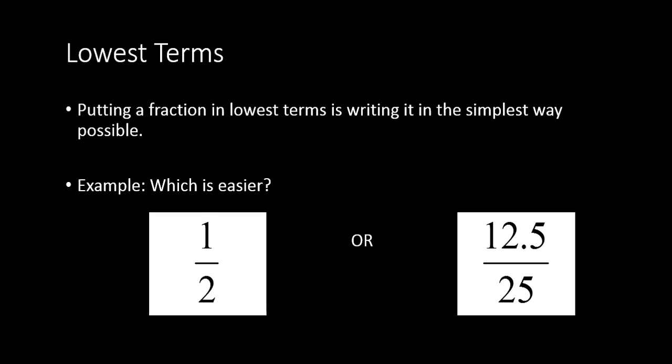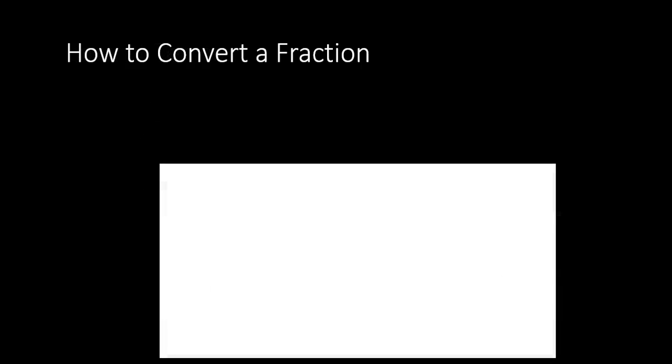Twelve-point-five out of twenty-five is more complicated and it would lead to more confusion. So, the way that we convert a fraction into its simplest form, or into lowest terms,